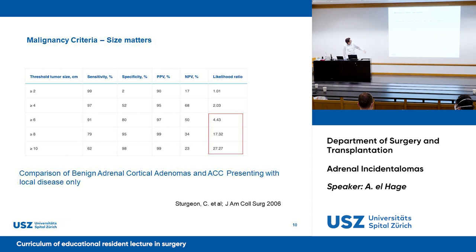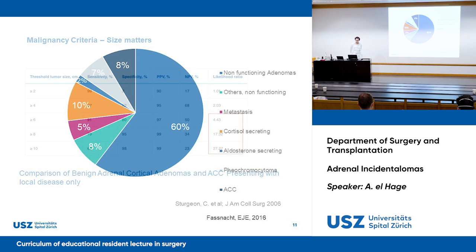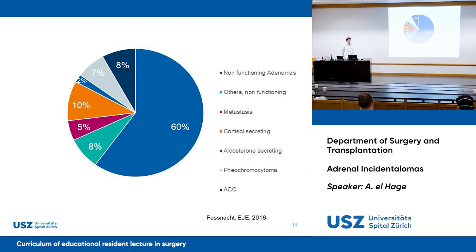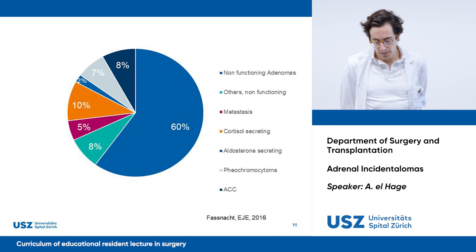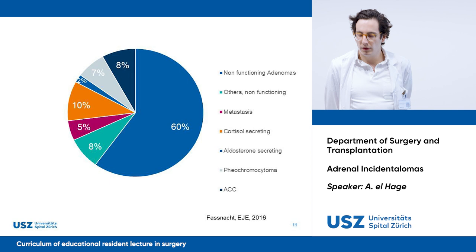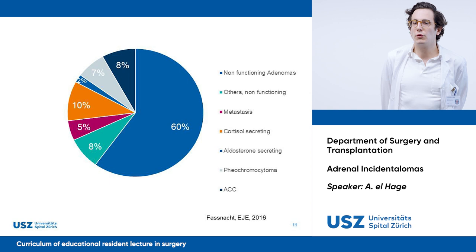To give an overview of the distribution: around 60% are non-functioning adenomas, 8% are non-functioning other tumors, 5% are metastases, 10% are cortisol-secreting tumors, 2% are aldosterone-secreting, around 7% are pheochromocytomas, and adrenocortical carcinomas account for around 8%.